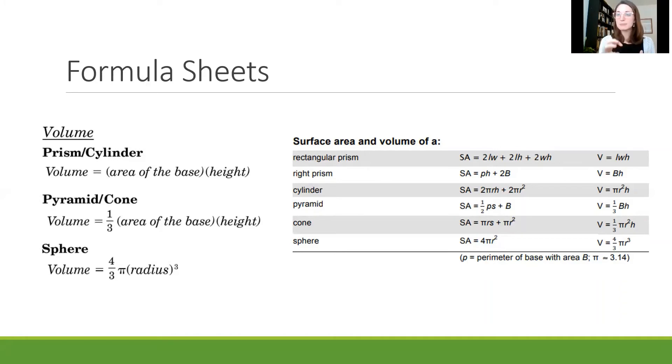The GED sheet has broken it down into a broader sense of the information. So they break it down into a rectangular prism, a right prism, a cylinder, a pyramid, cone, and sphere just to give you an accurate view of all of those. Both of them have the same essential information. They just list it in slightly different ways. So depending on which test you're taking you'll want to get familiar with the sheet that you're working with.